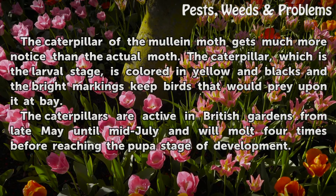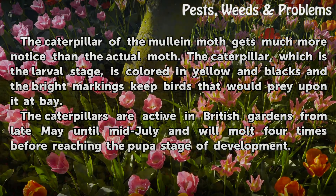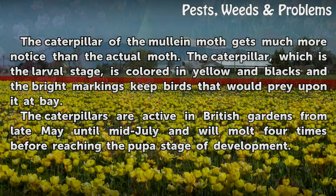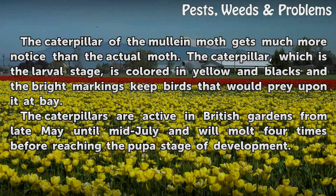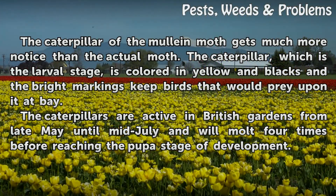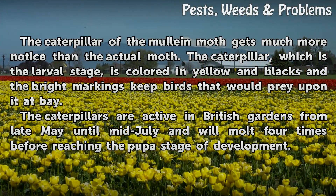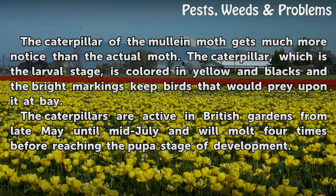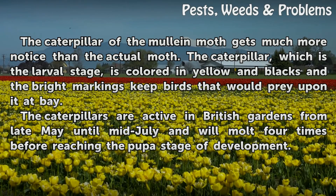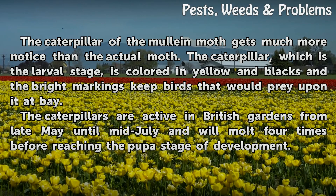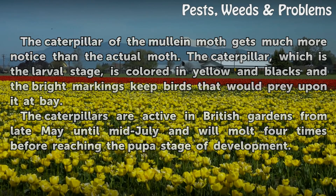The caterpillar of the mullein moth gets much more notice than the actual moth. The caterpillar, which is the larval stage, is colored in yellow and black, and the bright markings keep birds that would prey upon it at bay. The caterpillars are active in British gardens from late May until mid-July and will molt four times before reaching the pupae stage of development.